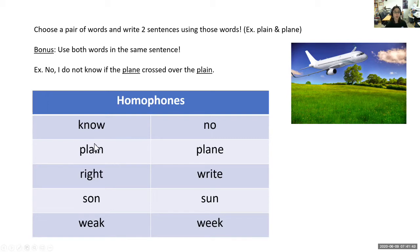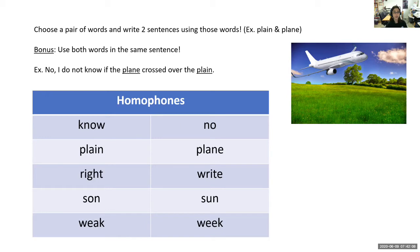For a bonus you can use both words in the same sentence. For example, if I chose right and write: 'Each question that you answered is either right or wrong' — that's this kind of right — and 'I write with a pencil and pen' — that's the other kind. Choose a new pair of words and write two sentences. Pause the video and do that.